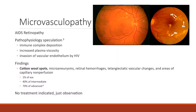Additionally, you can also find microaneurysms, marked with 'MA' and single arrows on the image on the right. These can also be seen in diabetes and appear as little red dots on the retina. 70% of people with advanced HIV disease, 40% with intermediate HIV disease, and 1% of asymptomatic people will demonstrate these microvascular changes. Importantly, there is no treatment indicated for microvasculopathy. Patients should still try to control their viral load with HAART.